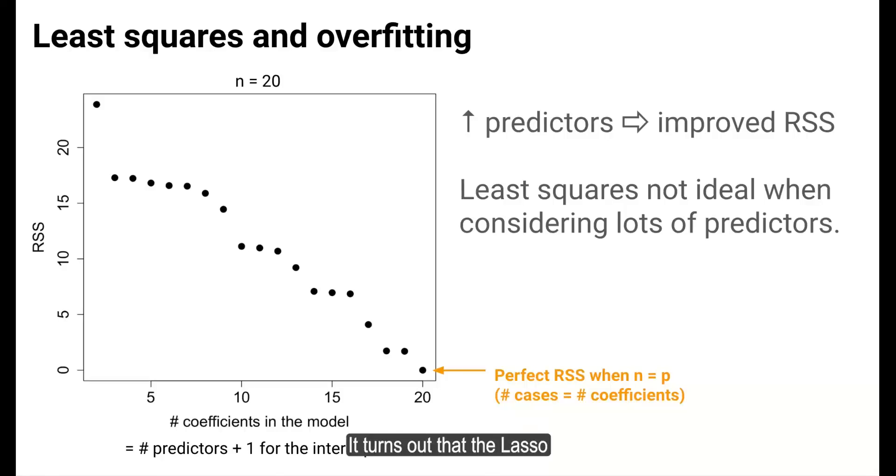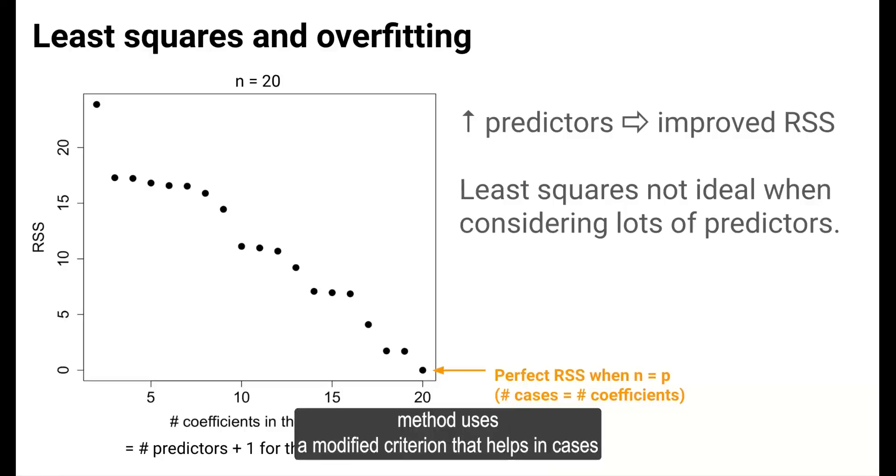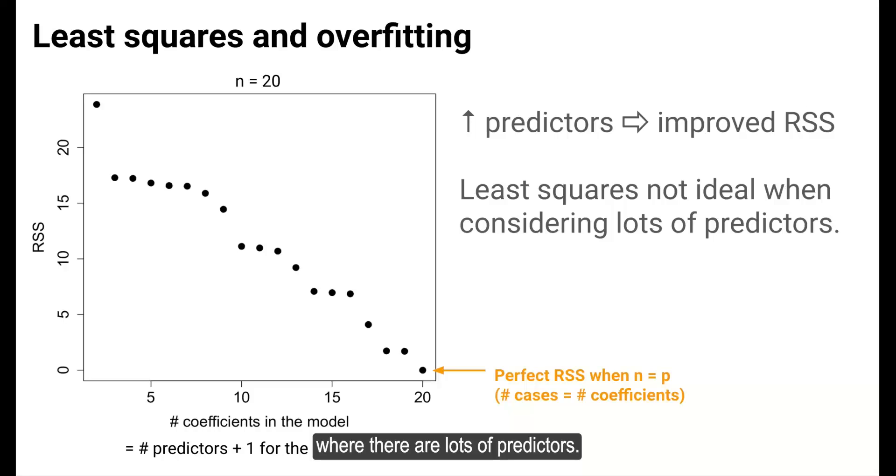It turns out that the LASSO method uses a modified criterion that helps in cases where there are lots of predictors.